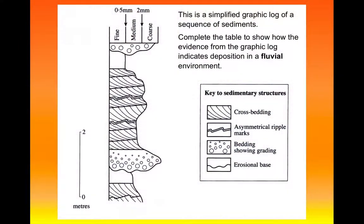The last log I'd like to look at is this one. This is one that's already been completed. You can see we've got a fairly simple grain size and a whole sequence of sediments with the sedimentary structures that are shown. Now these sediments have been interpreted as being deposited in a fluvial environment. What I'd like you to do is to think about how the evidence shown on this graphic log indicates deposition in that environment.